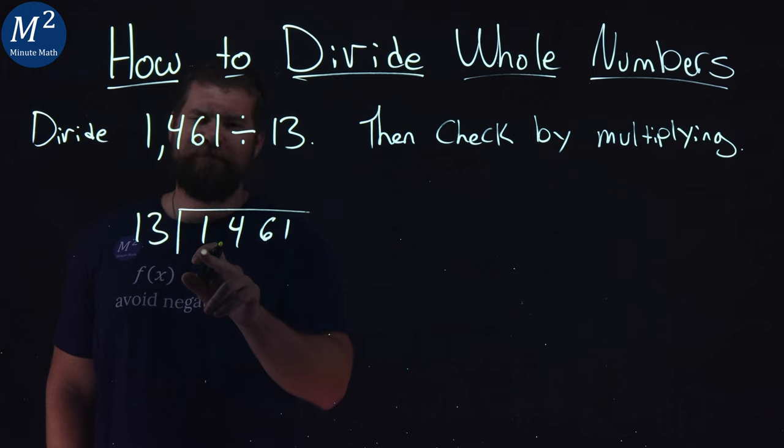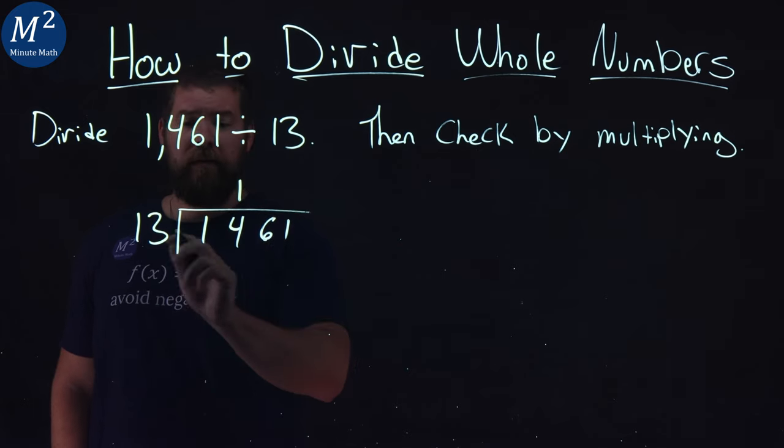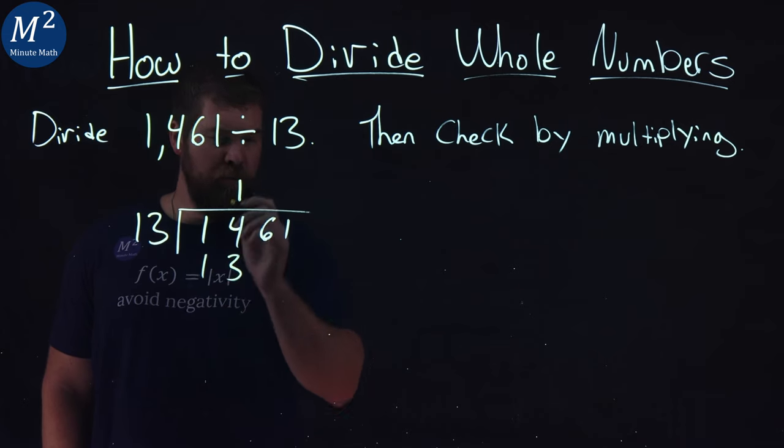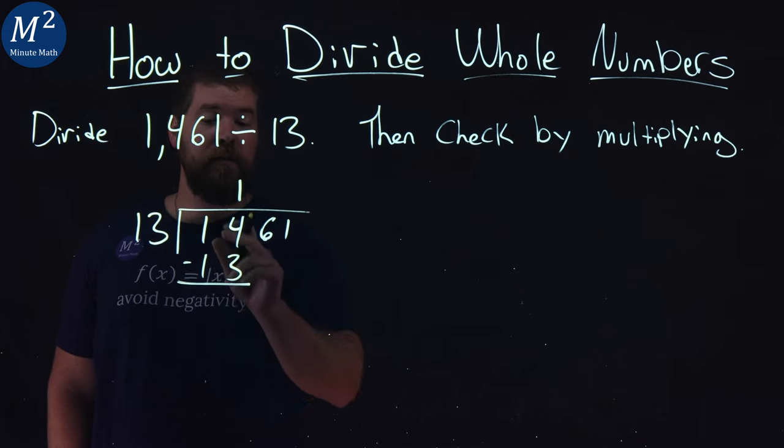Well, can 13 go into 1? No. 13 going to 14, though, one time. 1 times 13 is 13. Same process. Subtract the two numbers here. 14 minus 13 is 1.